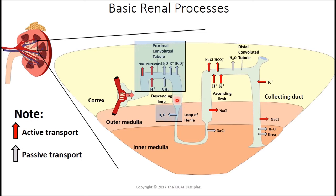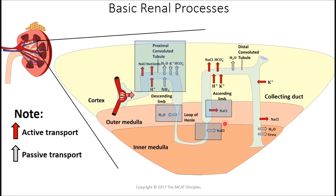Moving down to the descending limb of the loop of Henle, there is passive reabsorption of water. This comes from the concentration gradient — water goes where solute is, given a pathway like an aquaporin channel. As we move from cortex into medulla, the concentration gradient is actually increasing. On the ascending limb of the loop of Henle, sodium chloride is passively and actively transported, but water does not follow — because there are no aquaporin channels on the ascending limb.